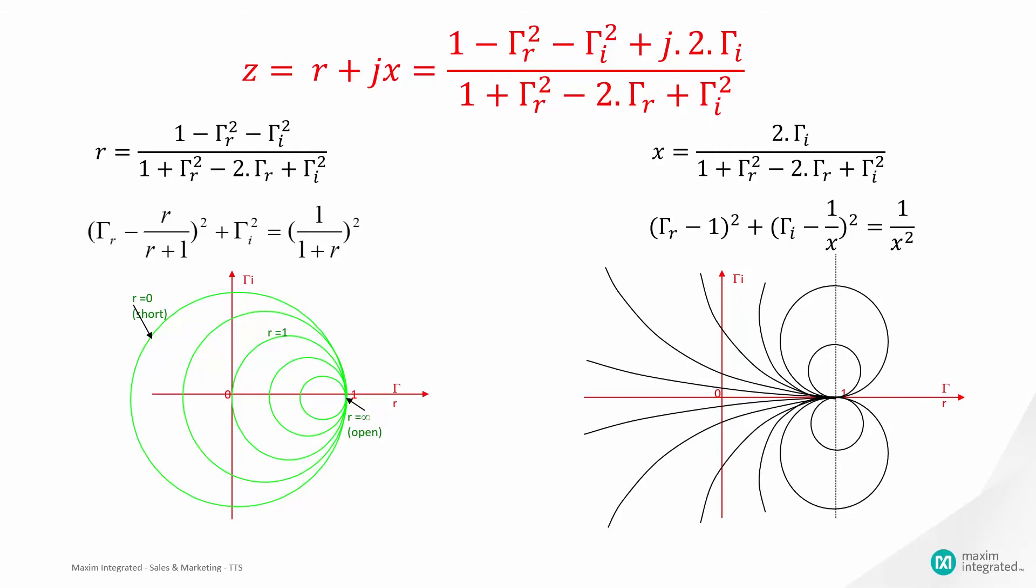By rearranging the terms, the real parts can be corresponded to the circle sets where all the centers are on the real axis and their radius equals 1 divided by 1 plus r. The imaginary parts can be represented by sets where all their centers are on the vertical axis and their radius equals 1 divided by x.